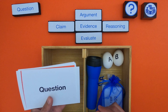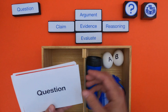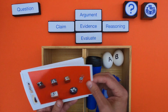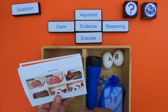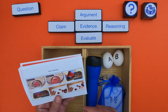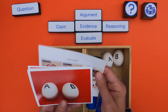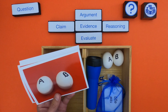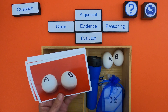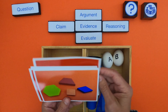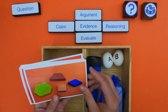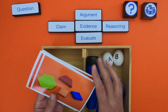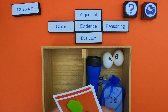After watching this video, you should be able to create an argument around a question like, are all metals magnetic, or is this a reversible or non-reversible change? I'm going to start by doing a quick argument around these eggs, trying to determine if they are raw or hard-boiled. Then you'll have a chance to look at different shapes and determine if they're a rhombus or not.